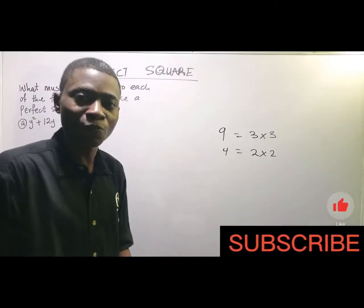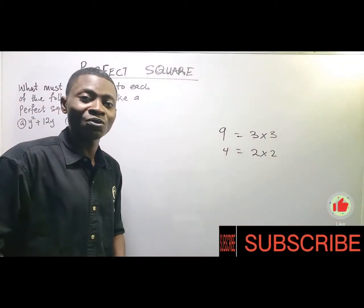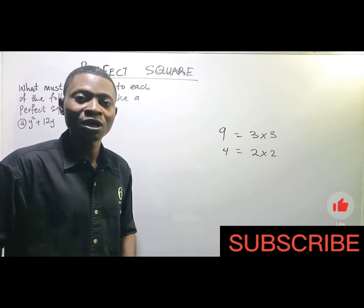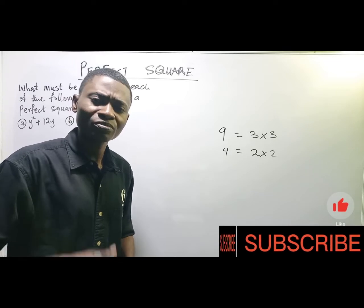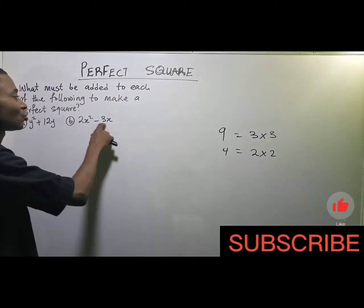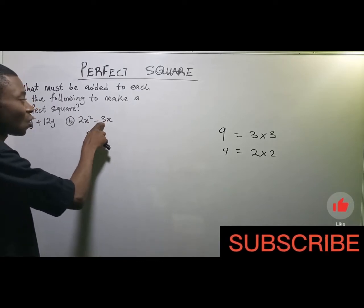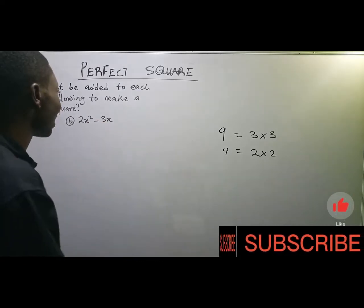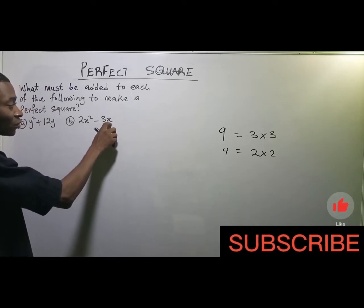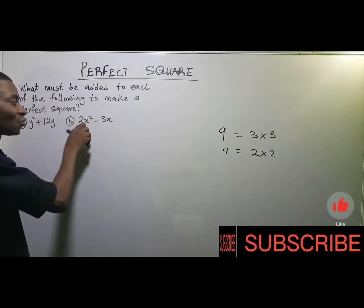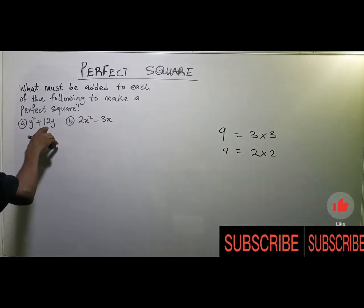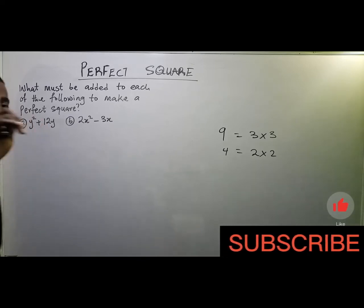This is actually very simple, so please watch this video to the end. All you need to do is pay attention to the coefficient of the linear term — that is, the coefficient of x or y, not x² or y². In this case for the first expression, we are looking for the coefficient of y.